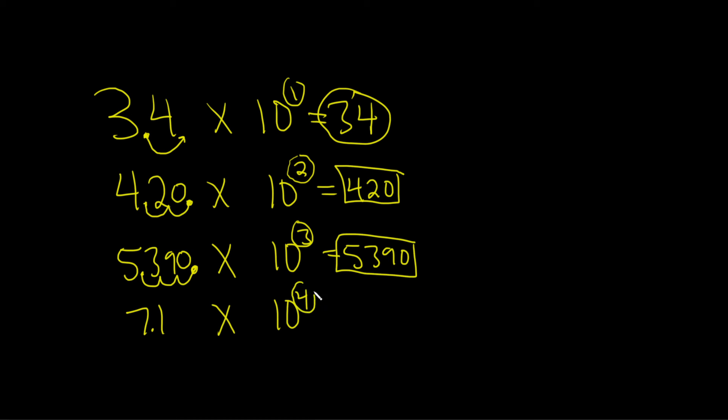This one has four zeros. So you have to go to the right four times. So 1, 2, 3, 4. That's a lot of zeros. And fill them in like this. So you get 71,000.